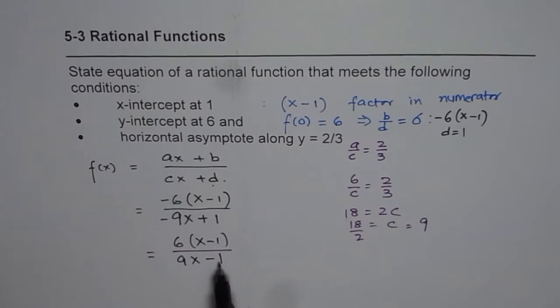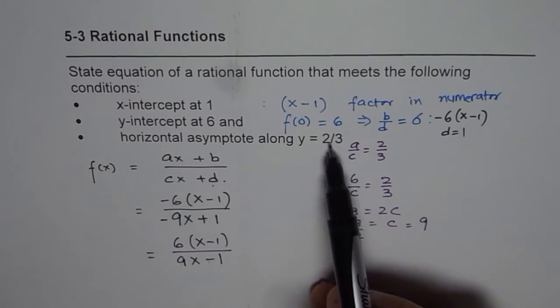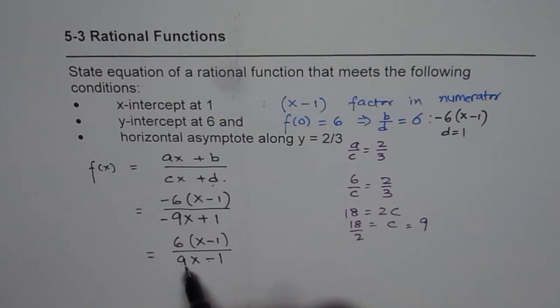This works better. If I put x equals 0, then I have minus 6 in the numerator and minus 1 in the denominator, giving me y-intercept of 6. The ratio of 6 over 9 is 2 over 3, so the asymptote works. And x-intercept at 1 also works.